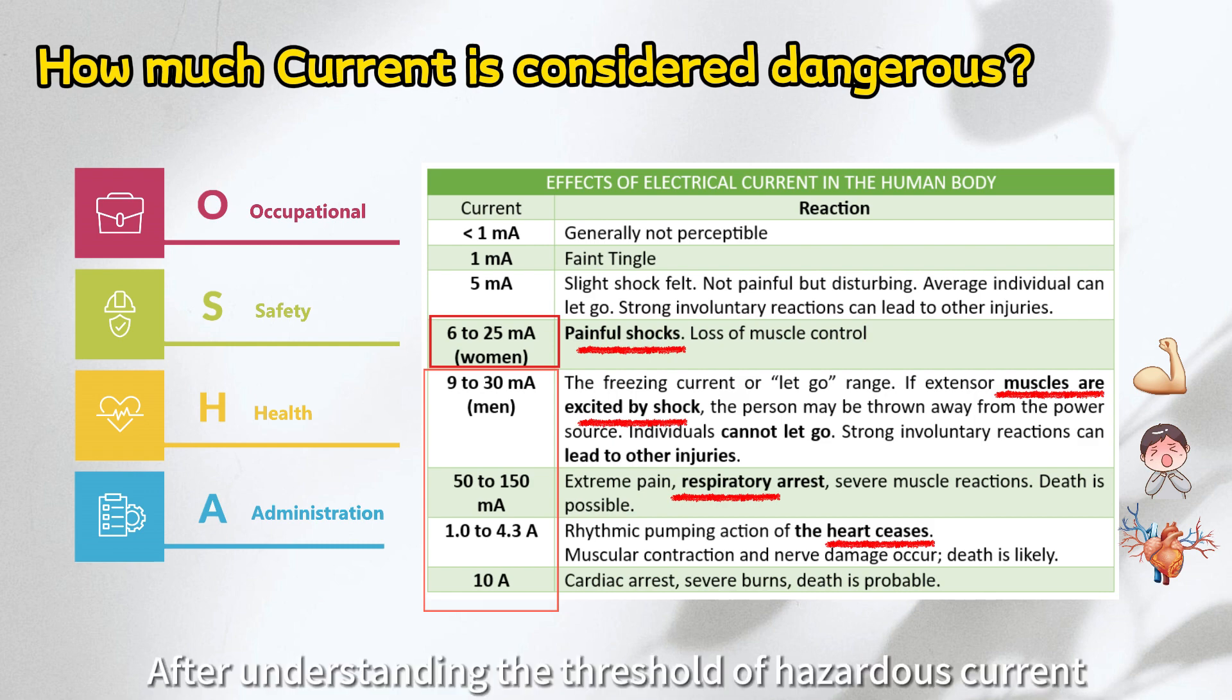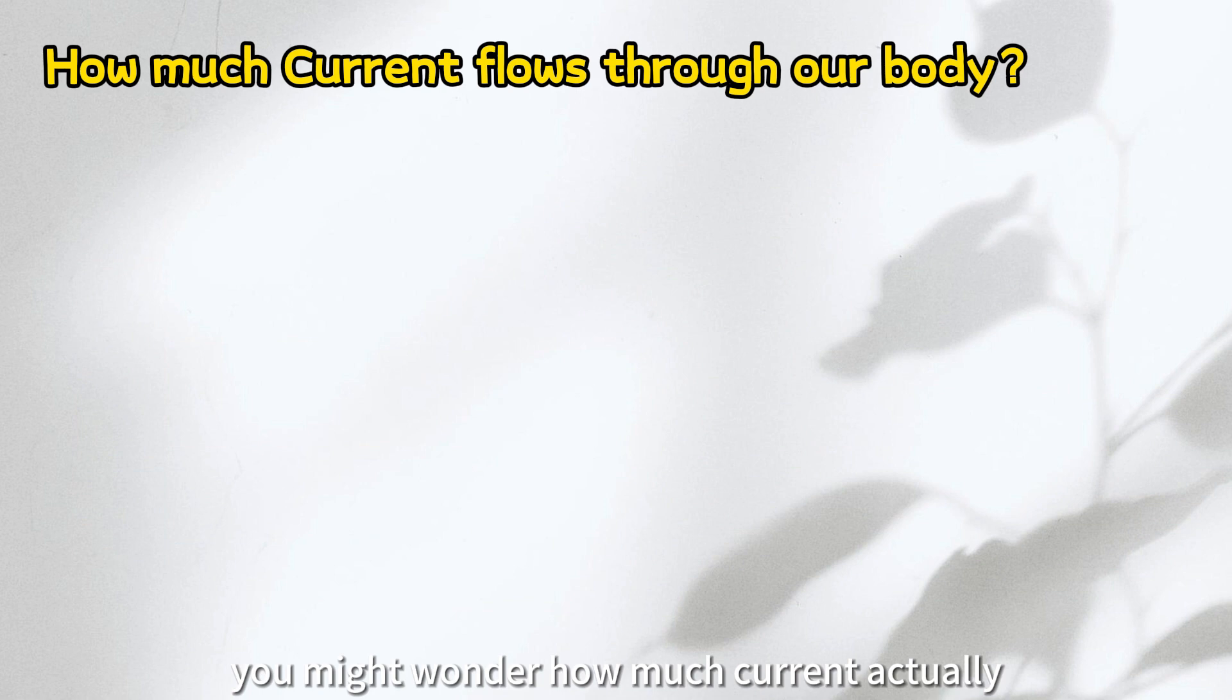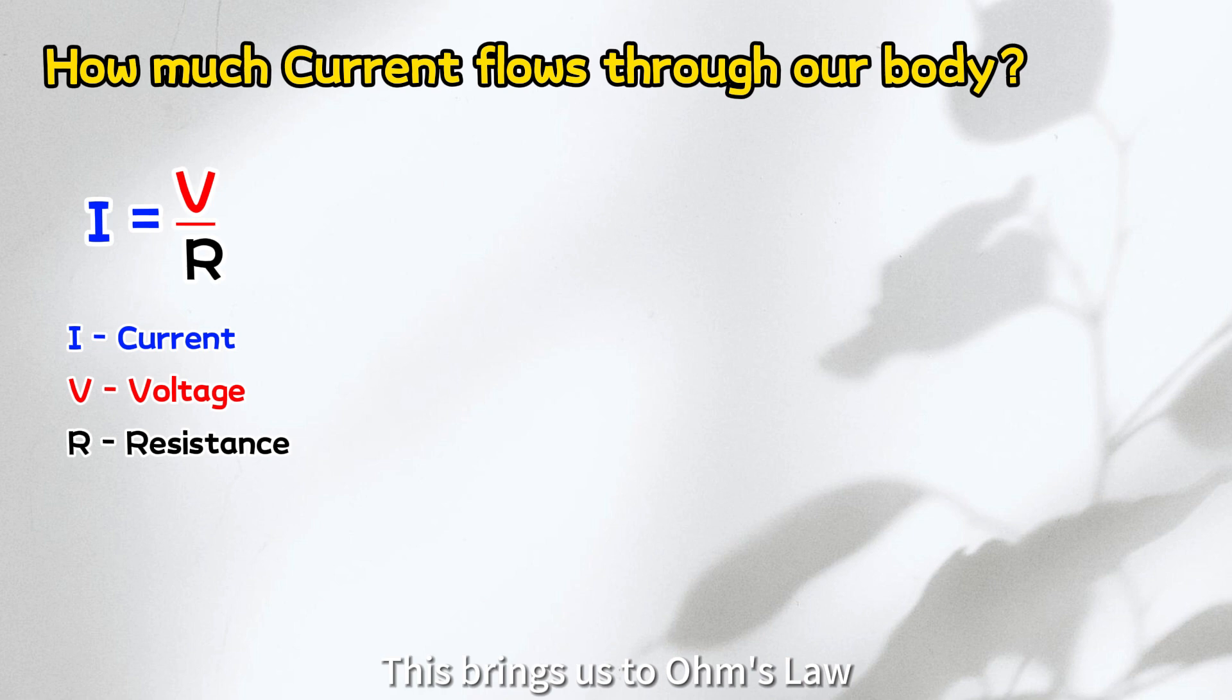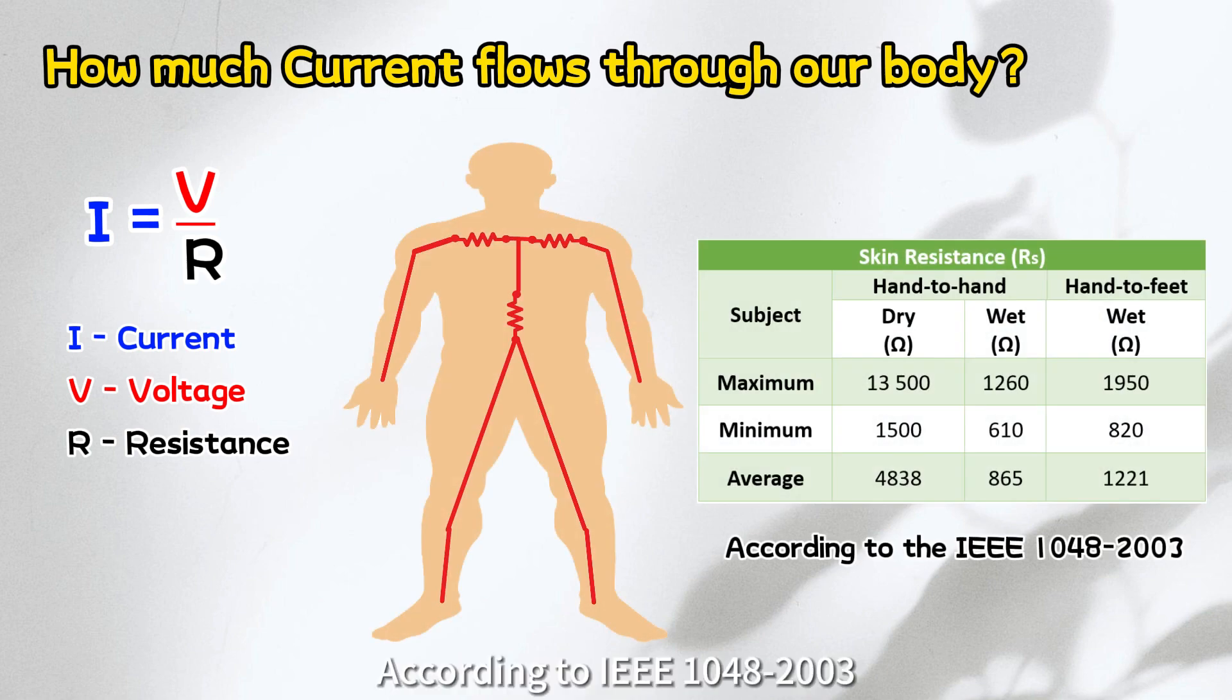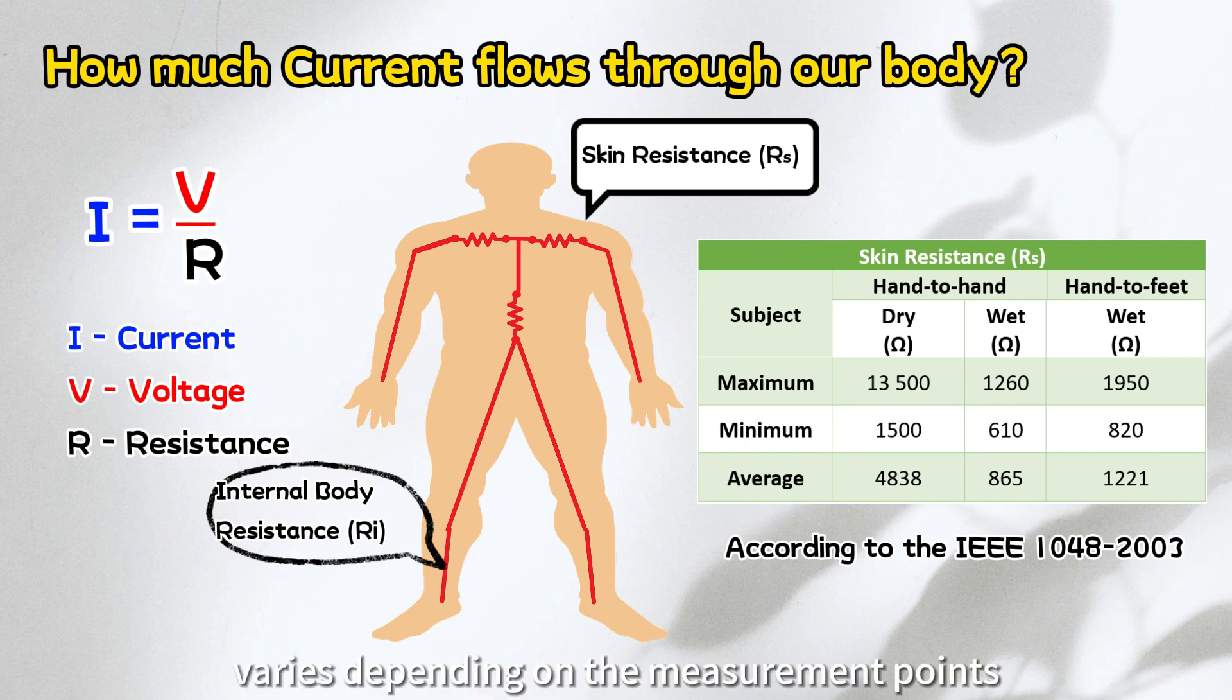After understanding the threshold of hazardous current, you might wonder how much current actually flows through our bodies in case of an electric shock. This brings us to Ohm's Law. The amount of current will depend on both the voltage we encounter and our body's resistance. According to IEEE 1048-2003, human body resistance consists of both skin resistance and internal body resistance. The skin resistance value varies depending on the measurement points, contact area, and the body's condition.